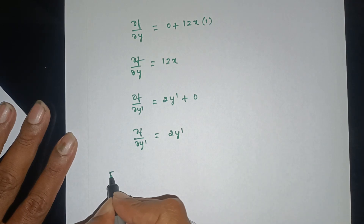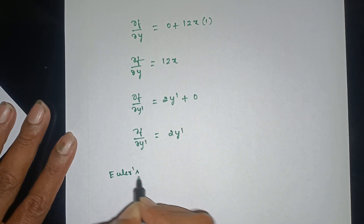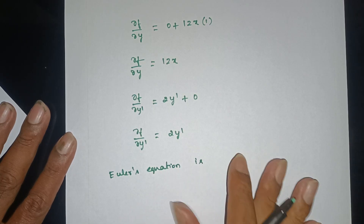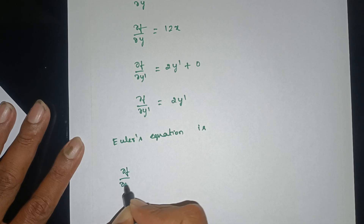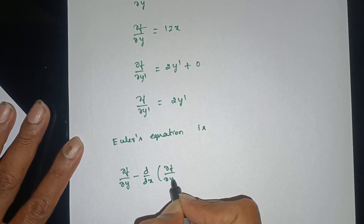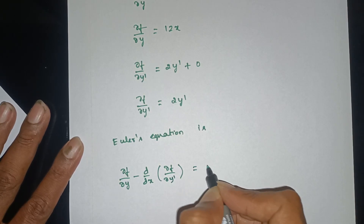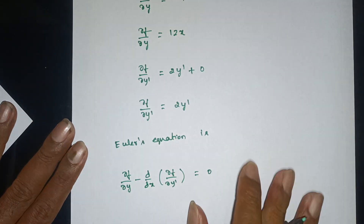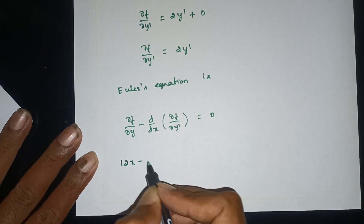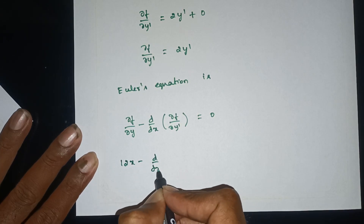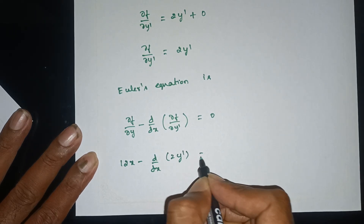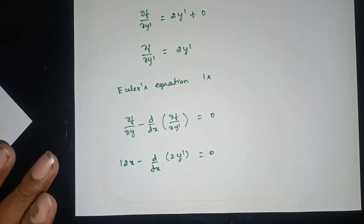This is the Euler-Lagrange equation, and the formula is: ∂F/∂y minus d/dx of (∂F/∂y') equals 0. Applying this formula: 2λx minus d/dx of (2y') equals 0.